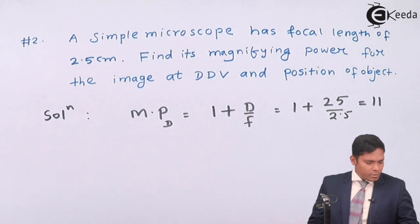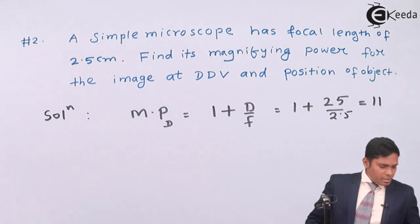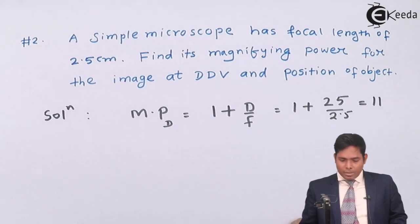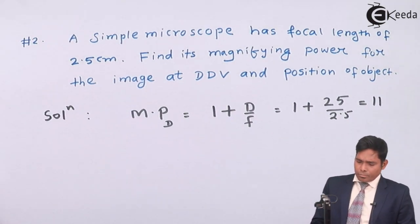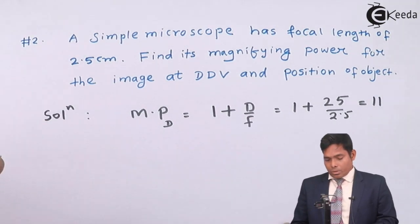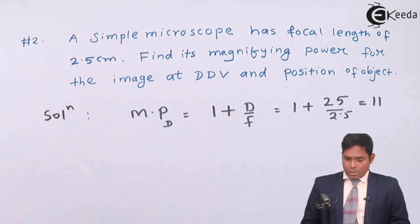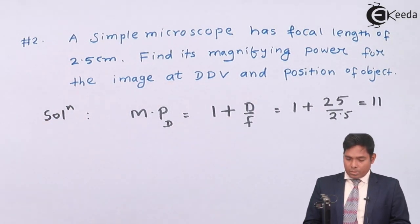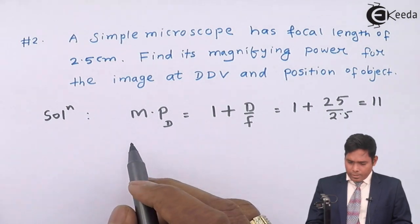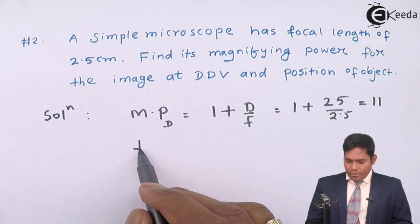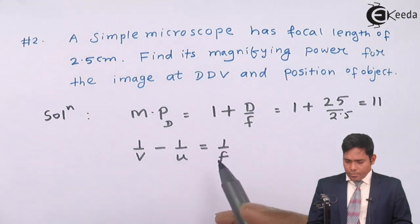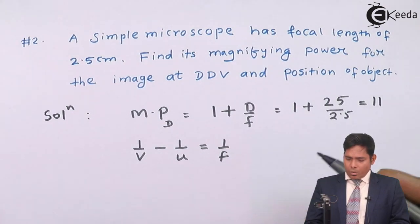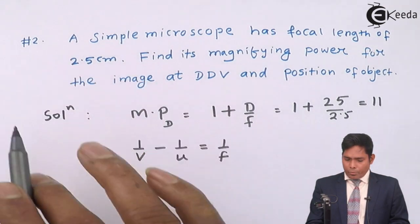Find its magnifying power for the image at DDV and position of object. Now, where is the object? We know that 1 by V minus 1 by U is 1 by F. Okay. Now, focal length is 2.5 is always positive.